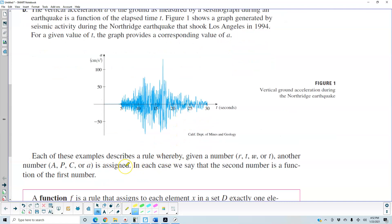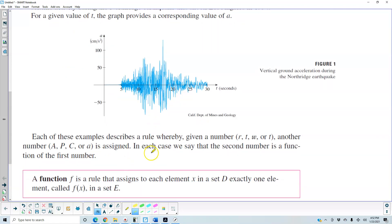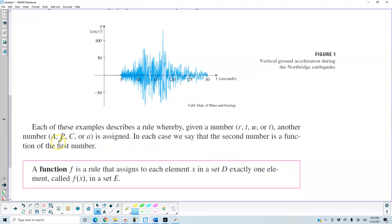Now each of these examples describes a rule whereby, given a number r, t, w, or t, another number a, P, C, or a is assigned. In each case we say that the second number is a function of the first number.